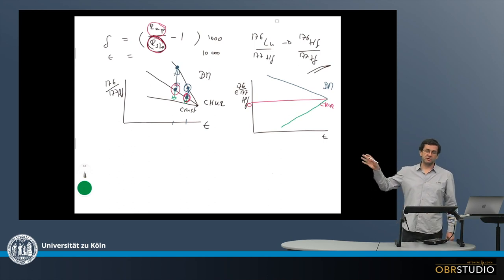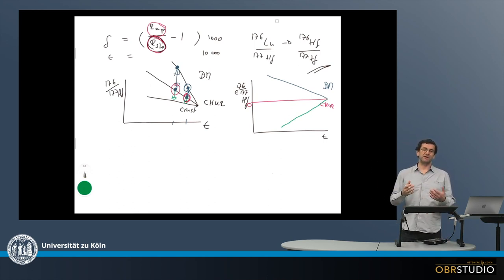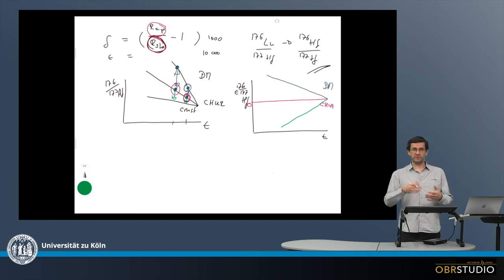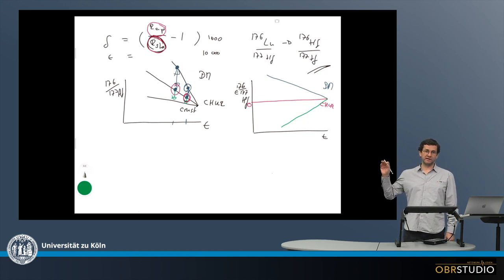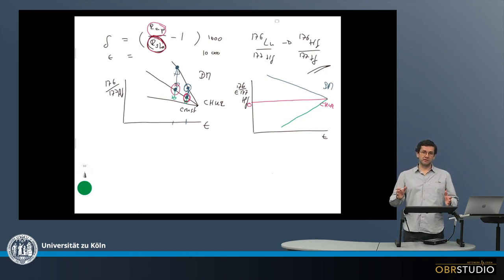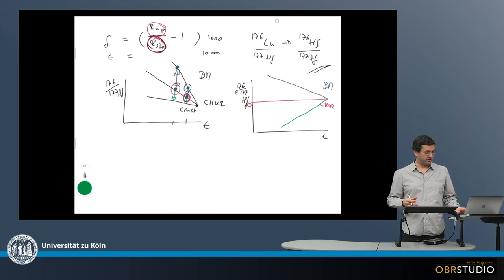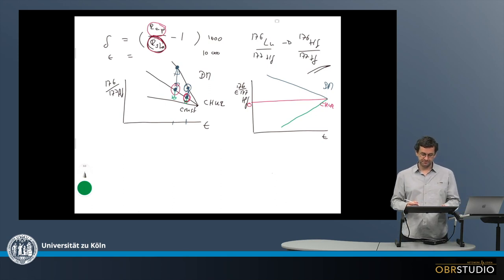On a side note: although these look like straight lines, they are not. The half-life of this system is quite long — about 37 billion years — and this is why it looks like straight lines over the time span of Earth formation, which is 4.5 billion years.